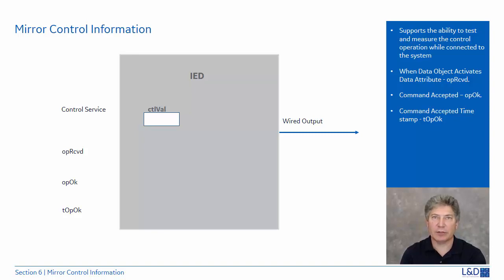Let's follow through the steps. A control command is applied to a controllable data object. As soon as the command has been received, the device shall activate the data attribute OPReceived.